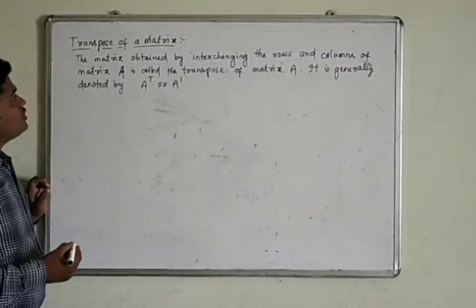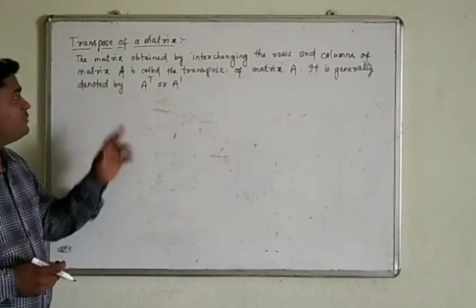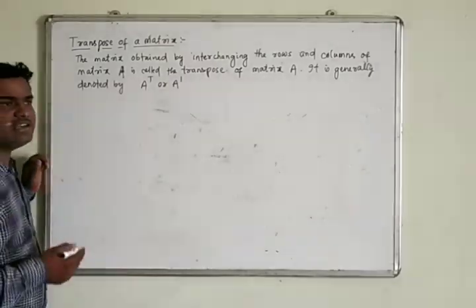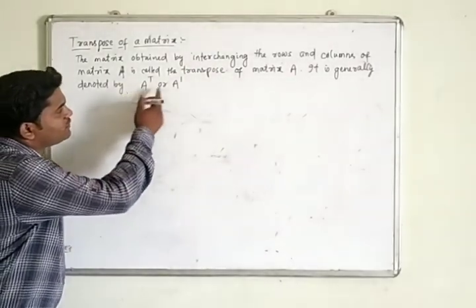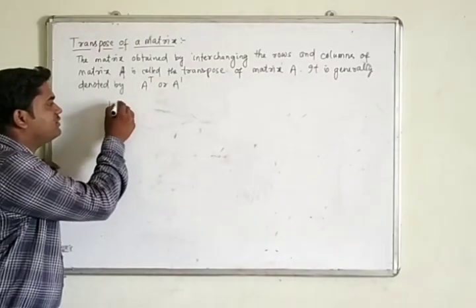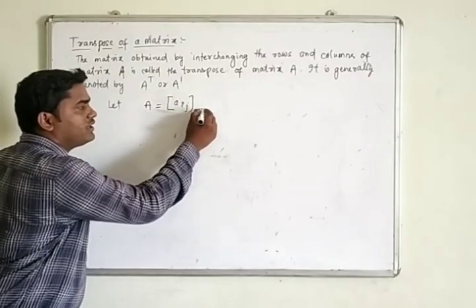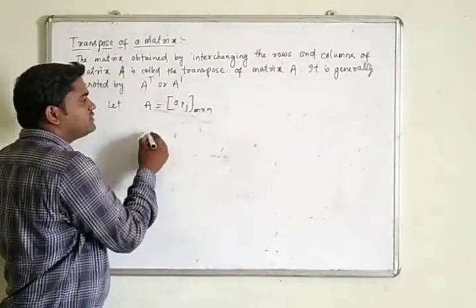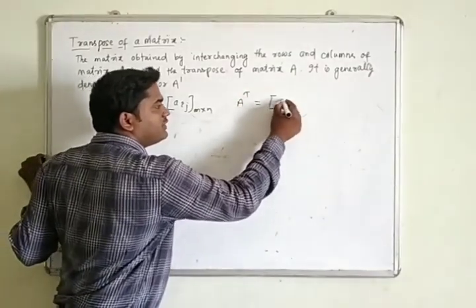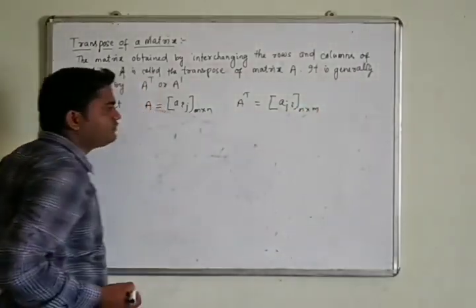First, the transpose of a matrix. The matrix obtained by interchanging the rows and columns of a matrix A is called the transpose of matrix A, denoted A' or A^T. Let A be a matrix [A_ij] of order M×N. Then its transpose is given by A^T equal to the matrix [A_ji] of order N×M.